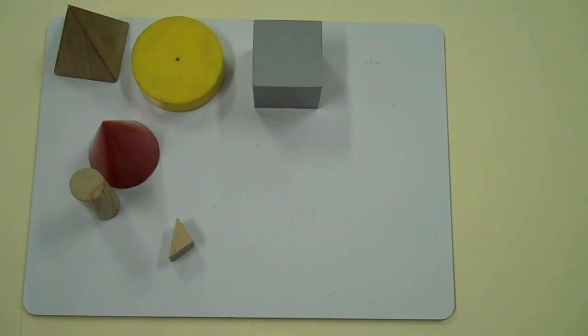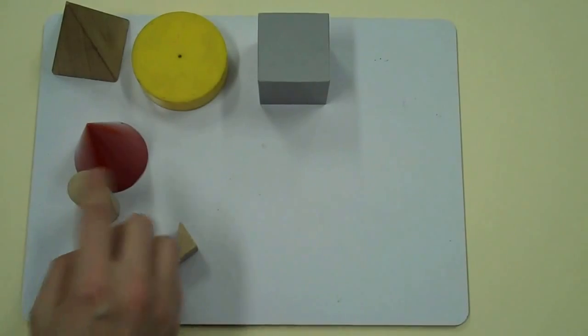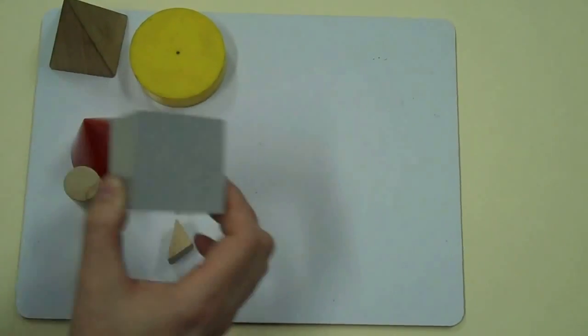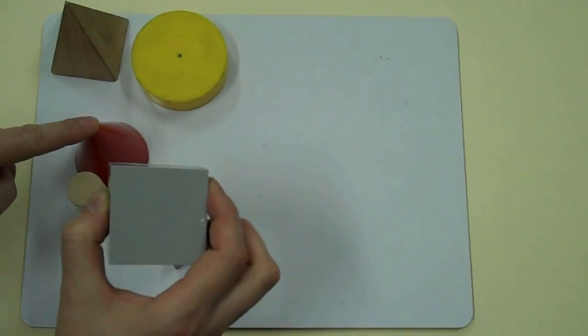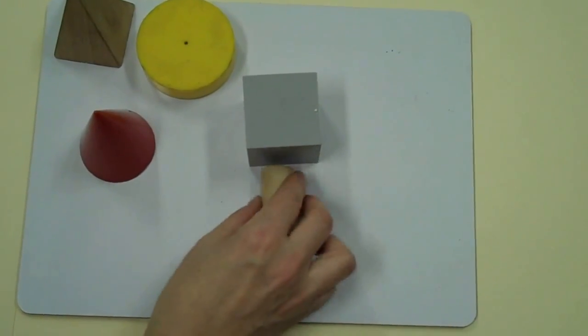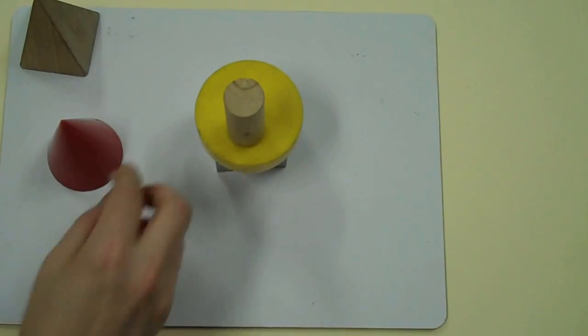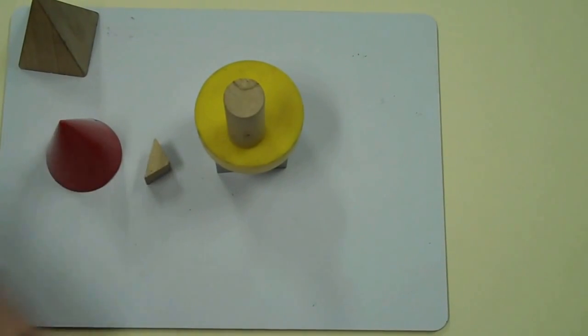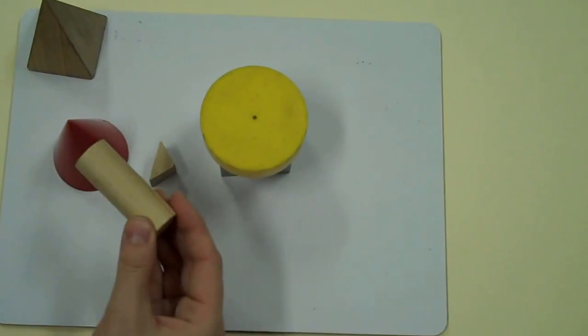First, I need to think about the attributes that the items have. So what attributes do 3D objects have? Well, they all have faces. Some have edges. Some have corners called vertices or one vertex. Some can roll, and some can stack. They can come in different sizes, different colors, and they can be made out of different materials.